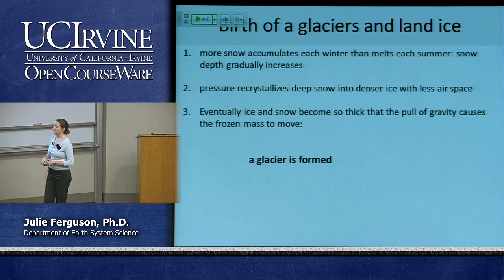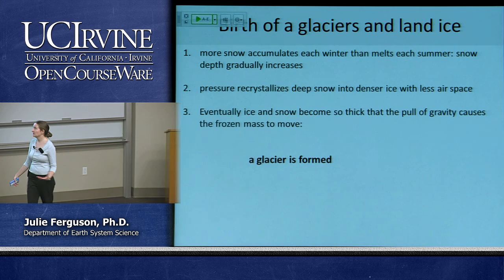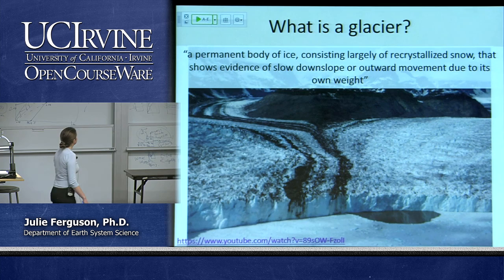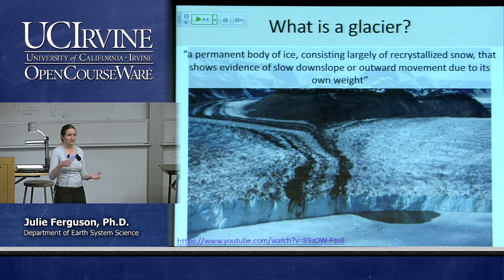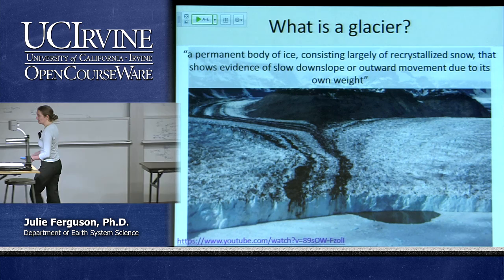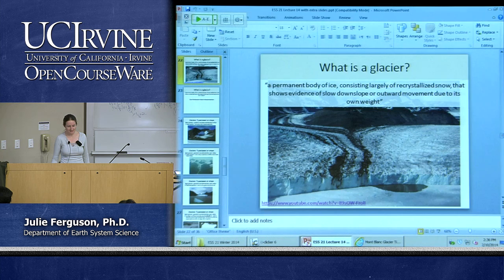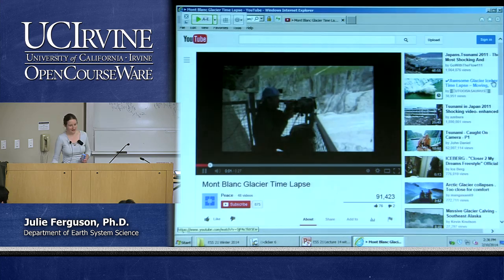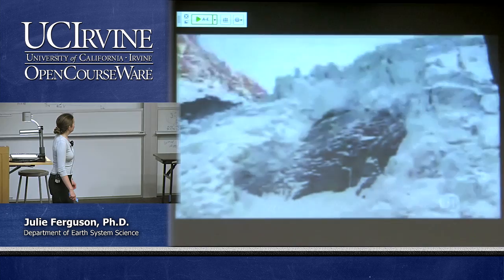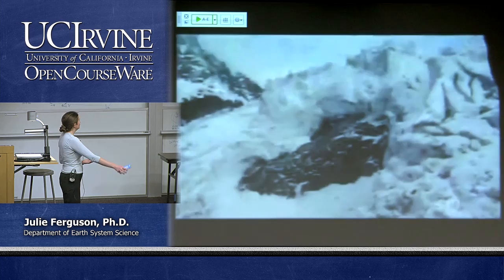Eventually, if we build up enough ice and snow, it becomes so heavy it starts to move due to gravity — it starts to flow. Once that happens, we have formed a glacier. The definition is: a permanent body of ice consisting largely of recrystallised snow that shows evidence of slow downslope or outward movement due to its own weight. To be a glacier, it has to move. Time-lapse photography of a glacier in the Alps — Mont Blanc — shows the ice flowing over the course of an entire year.